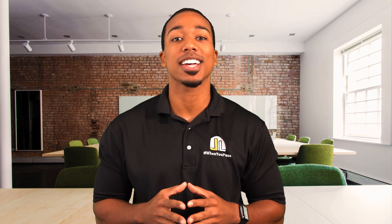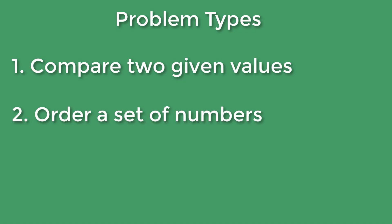The second type of question in skill one is ordering numbers. You'll be given four numbers and asked to order them from least to greatest, greatest to least, or identify the second greatest number, second least number — some place in that ordered list.